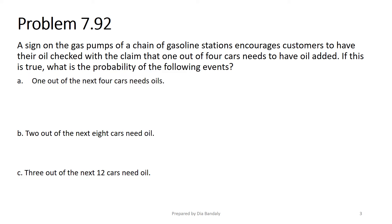The next problem involves a sign at a gas station encouraging drivers to check their oil. They claim that one out of four cars arriving at the station needs oil added. There are several questions about the probability of this happening. First, we need to identify what kind of probability distribution applies here. The context of the problem suggests a binomial experiment.